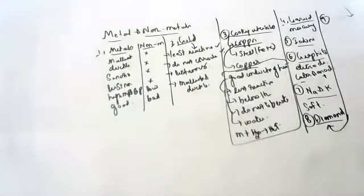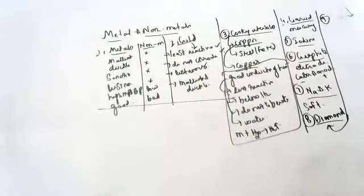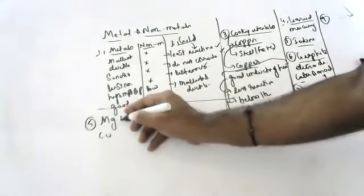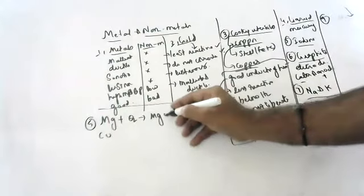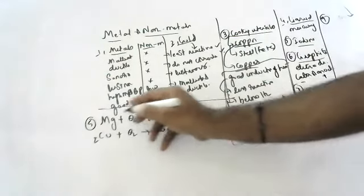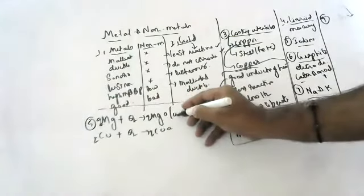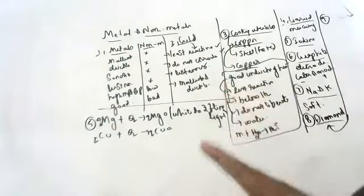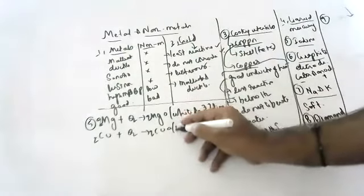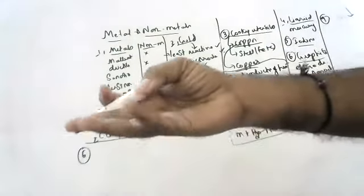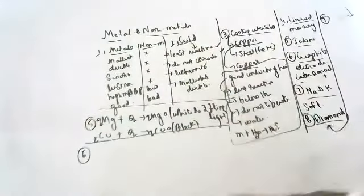What is observed when a magnesium ribbon is burnt, and what happens when copper is burnt in air? When magnesium is burnt in air, you get a white dazzling light. When copper reacts with oxygen, you get black copper oxide. Remember: magnesium burning gives white dazzling light, and copper with oxygen gives black copper oxide. The balanced equation is 2Cu + O2 → 2CuO.